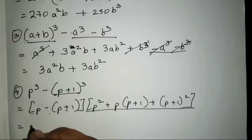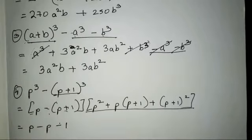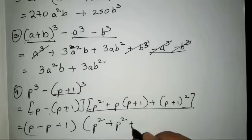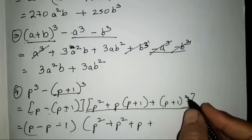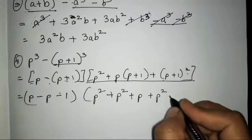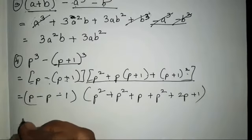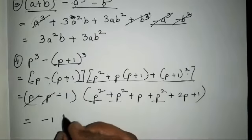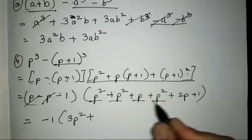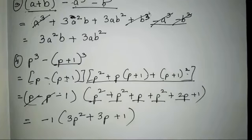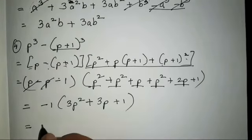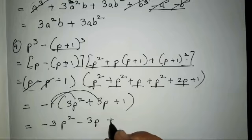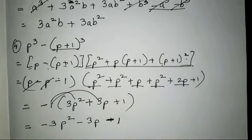Now the fourth sum: we expand and open brackets. p minus p gives zero, plus and minus becomes plus 1. Then p square plus p into p square plus p into 1 is p, and expanding the square formula gives p square plus 2p plus 1. Collecting terms: there are 3 p squares giving 3p square, plus 1 and 2 gives 3p plus 1. Multiplying by minus 3 gives 3p square minus 1 — since minus and plus gives minus.